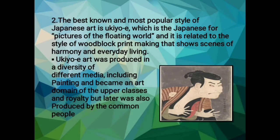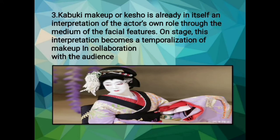The best known and most popular style of Japanese art is Ukiyo-e, which is Japanese for 'Picture of the Floating World.' It is related to the style of woodblock printmaking that shows scenes of harmony and everyday living. Ukiyo-e art was produced in a diversity of different media, including painting, and became an art domain of the upper classes and royalty, but later was also produced by the common people.